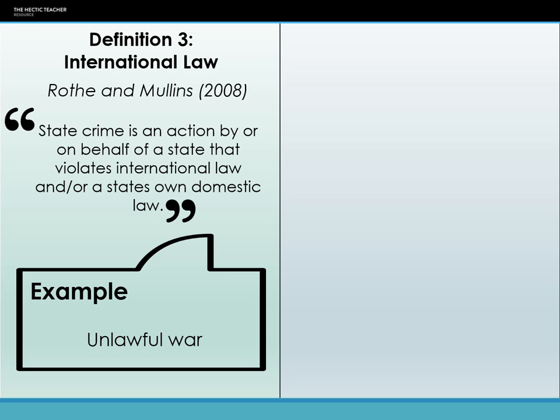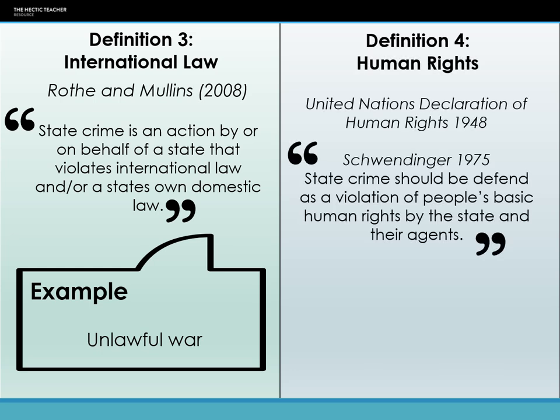The third definition comes from Schwerdinger, who says that state crime is any violation of people's basic human rights by the state or their agents — which could be the military, police, or officials within government. This is based on the United Nations Declaration of Human Rights, written in 1948. However, not every country has signed up to the Declaration of Human Rights, so you can't hold a country accountable to a standard they have not agreed to.